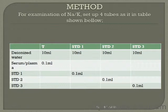The method for examination of sodium and potassium: set up four test tubes as arranged in the table. The first test tube (T) contains 0.1 ml of serum/plasma and 10 ml of deionized water. Standard one has 0.1 ml of standard one; standard two has 0.1 ml of standard two; standard three has 0.1 ml of standard three.